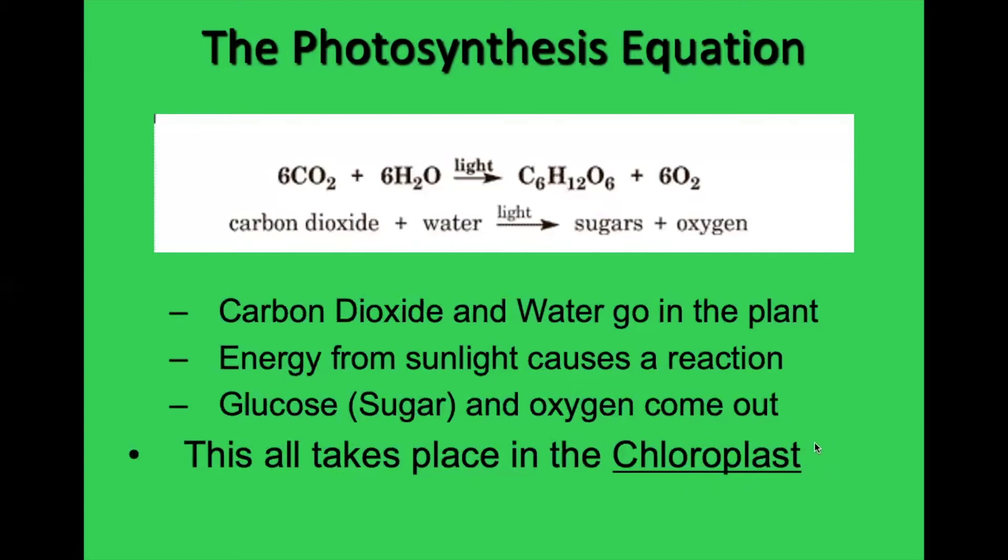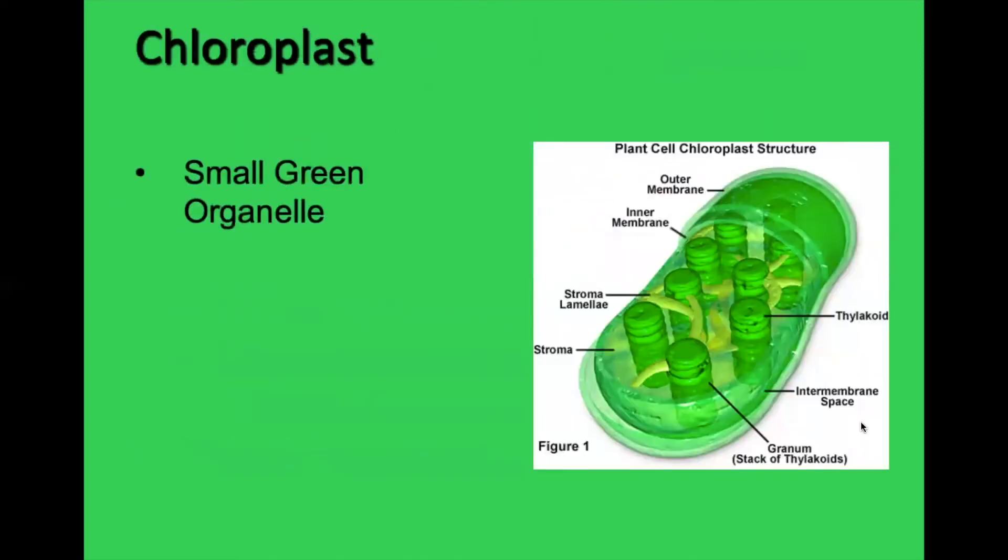This is the part of the plant that makes the plant green. It is full of a chemical called chlorophyll. Chlorophyll is green. So plants look green because of that. And the reason why we don't look green is because we don't have a chloroplast. So we can't make our own food. That's why we have to eat.